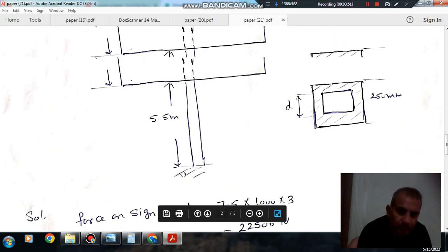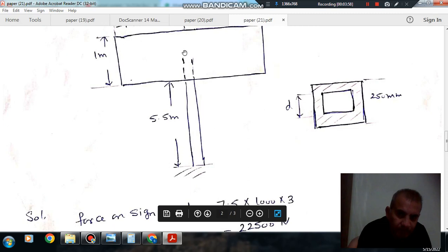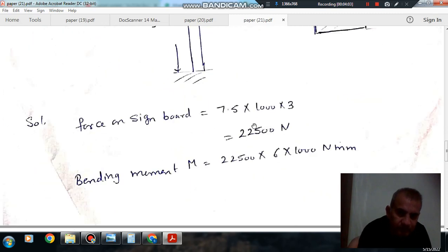Now the bending moment is, so that is the force on the signboard and the bending moment will be, and this will act at the center. So that is at a distance 5.5 plus 0.5, that is 6m from the fixed point.